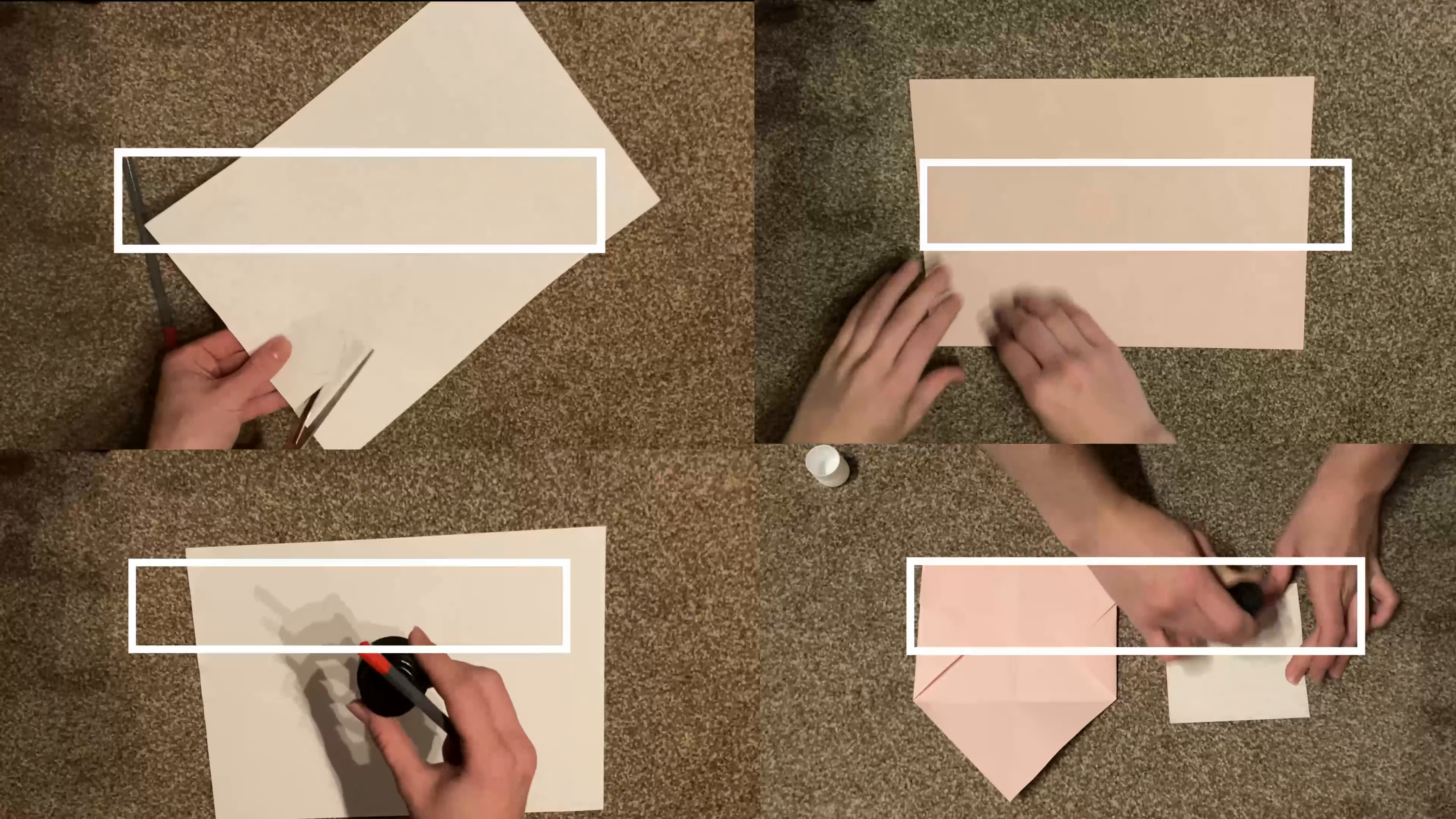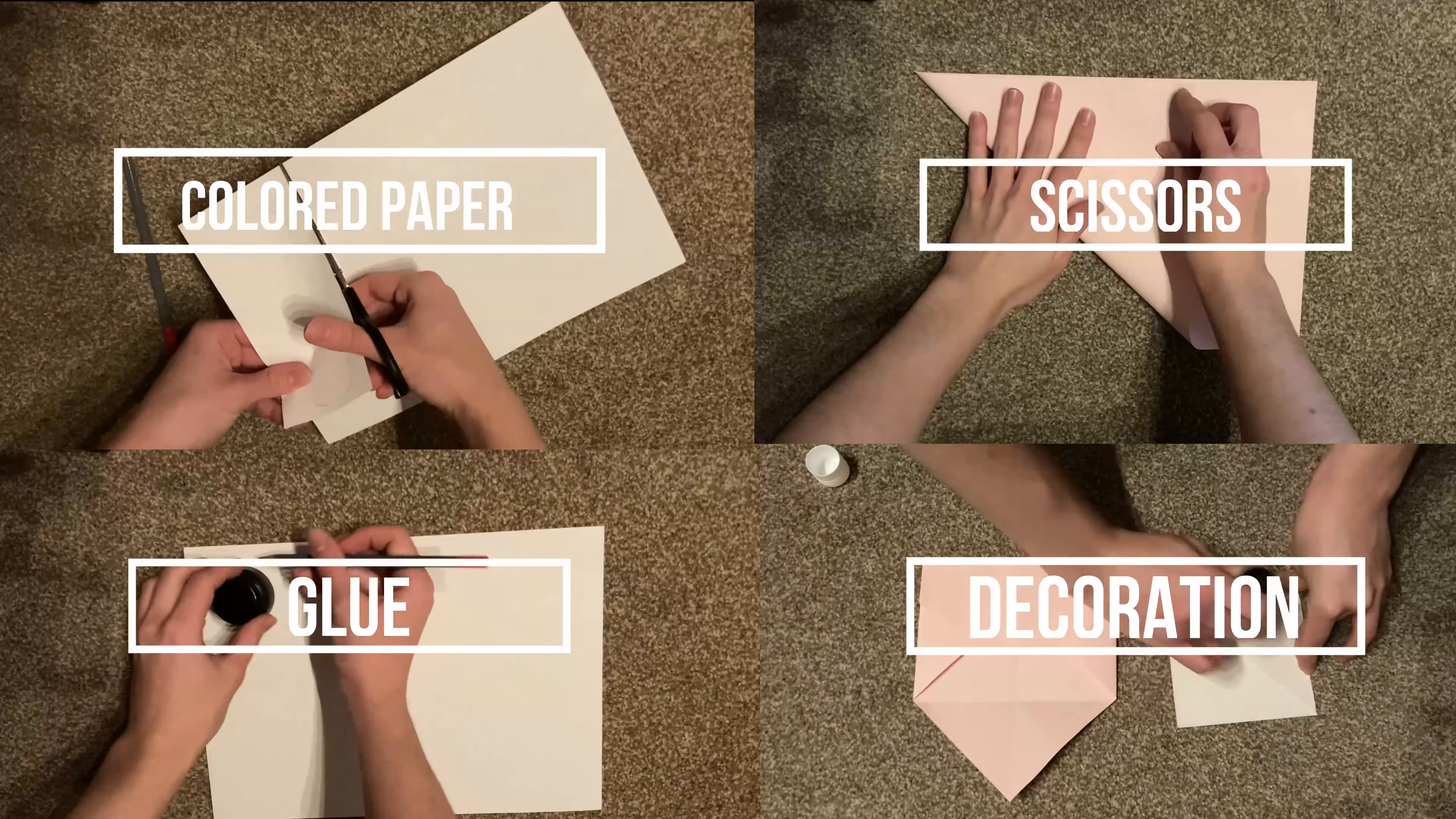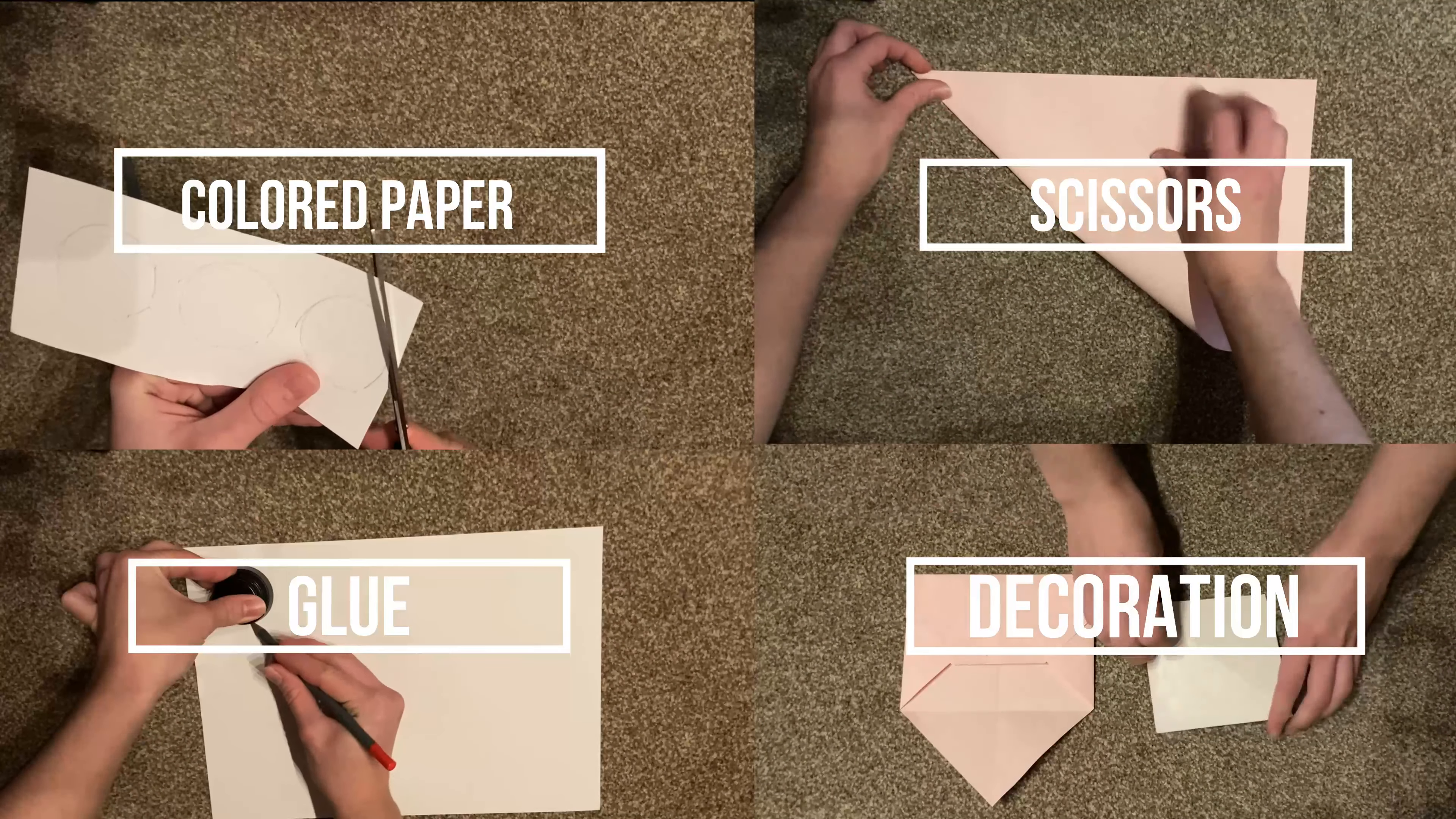To make our own Advent calendar you need colored paper, scissors, glue, and if you want you can also use some stickers or decoration to make your boxes and envelopes look really lovely.